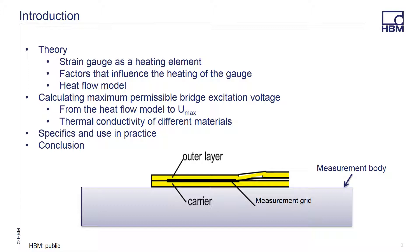Calculating the maximum permissible excitation voltage for a strain gauge is sometimes required. The data sheet included with a strain gauge will often include a suggested excitation voltage, but this value is based on a typical material and that may not match up with the material you are using. A strain gauge is basically a little heater — there is current flowing through a resistor. We will discuss the factors that determine the amount of heat generated, then go through the math to determine the excitation voltage based on the size of the gauge, its resistance, and the thermal conductivity of the material the gauge is attached to. Finally, we will go through a couple of examples and conclude.